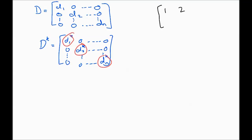A quick example: if we have the diagonal matrix A equal to [[1, 0], [0, 3]], then A cubed would simply be [[1, 0], [0, 27]]. It's as easy as that.